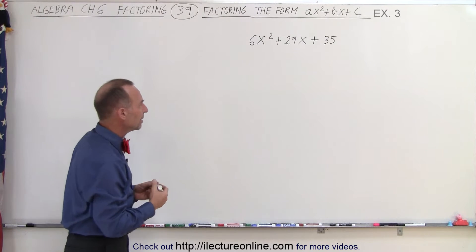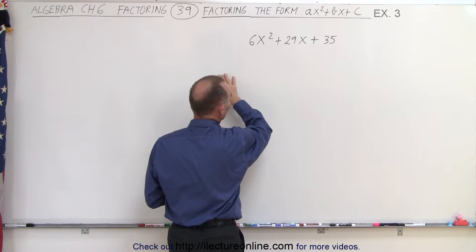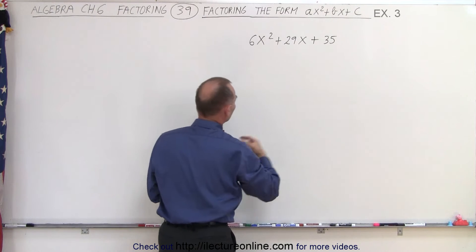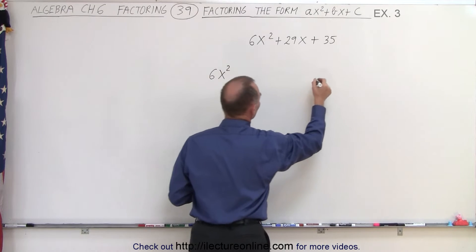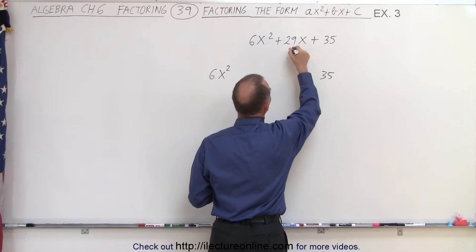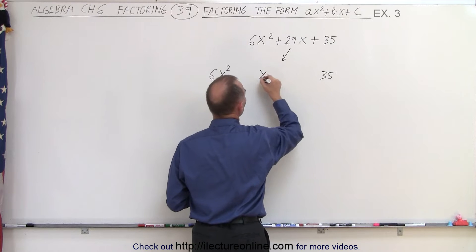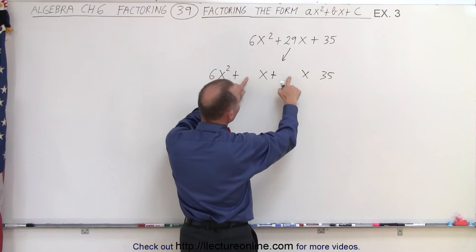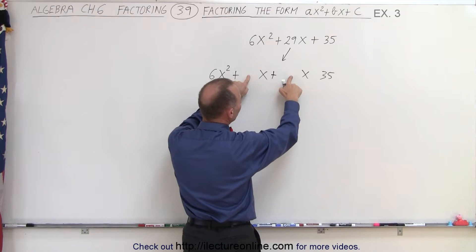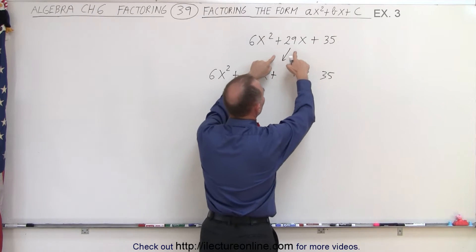The idea is that we're going to rewrite this as a polynomial of four terms, where the first term is 6X squared, the last term is 35, and the middle term will be split into two middle terms. We know that everything is positive, and we're looking for two coefficients that will add up to 29.